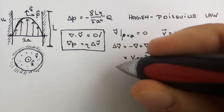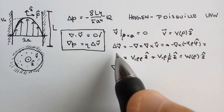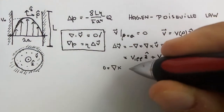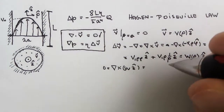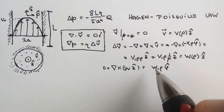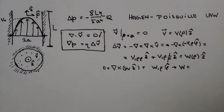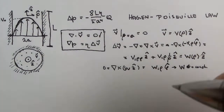Next we must compute the curl of this result. We know that curl of the Laplacian of V equals (1/eta) times the curl of the pressure gradient, which is zero. So curl of W(rho)*z-hat must be zero. This gives us dW/dRho = 0, meaning W must be constant. Let's call this constant W.